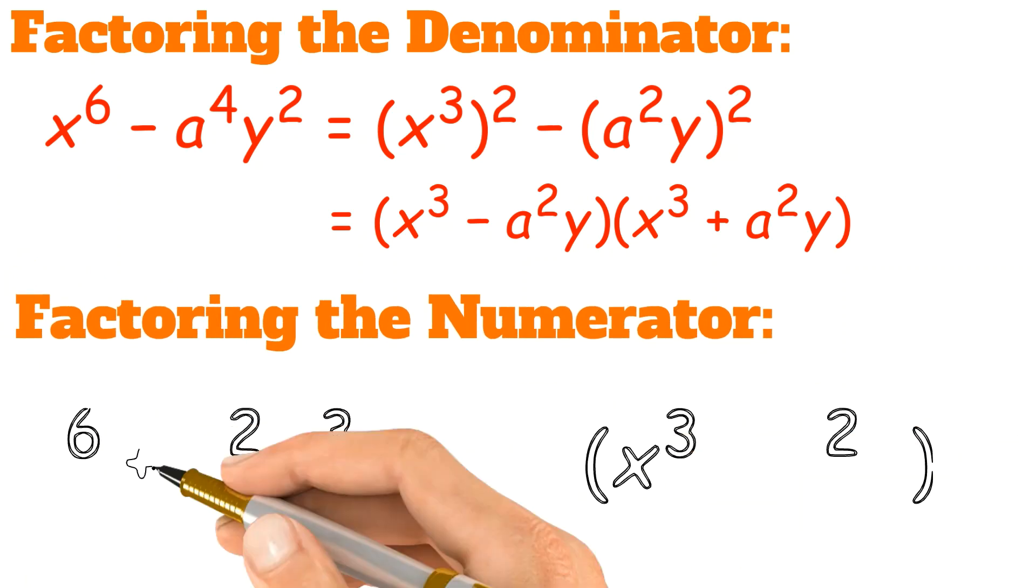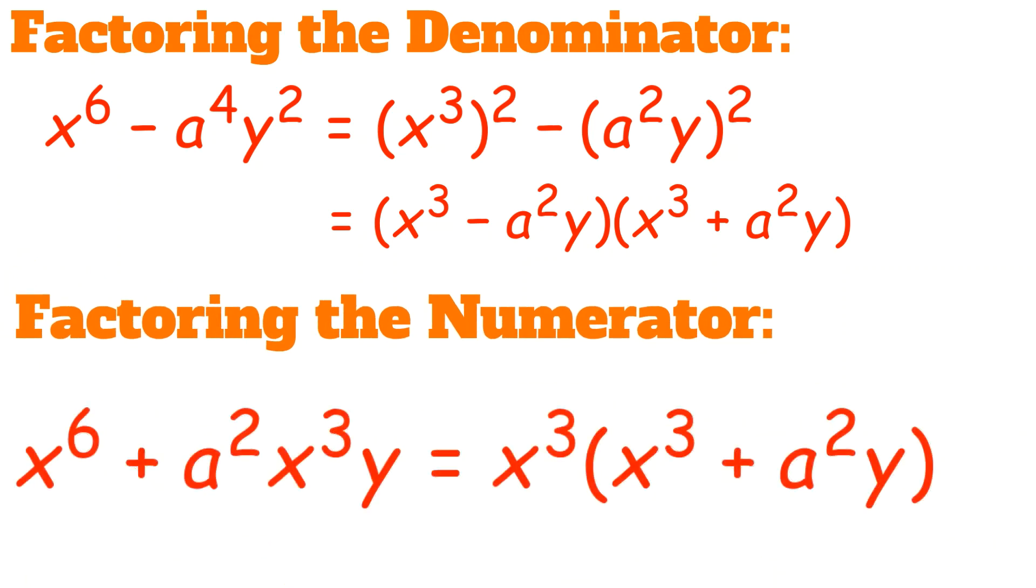Now we can also factor the numerator by pulling out the x cubed term from both of the terms. We then get x cubed times x cubed plus a squared times y.